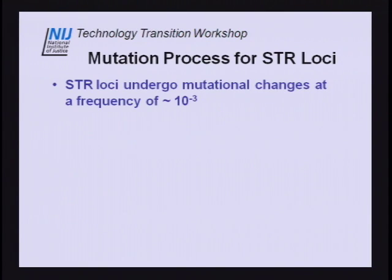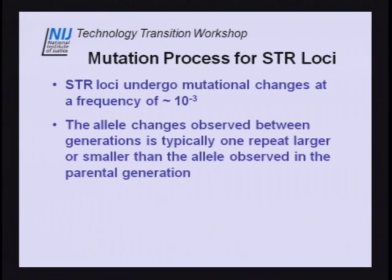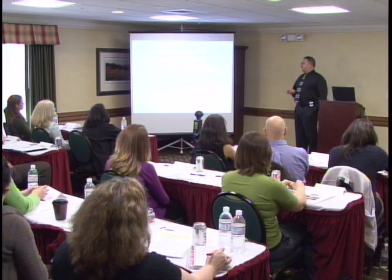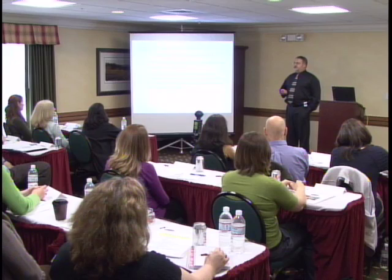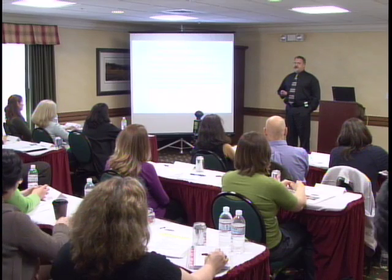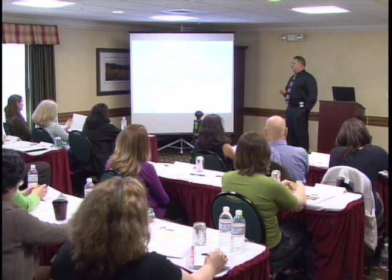For a point of comparison, the mutation rate of a SNP marker system is on the order of 10 to the minus 6 to 10 to the minus 8 — a much, much rarer event. That's why everybody likes the idea of these SNPs, especially for generational type studies, because they don't undergo mutation at a very rapid rate. One of the things we can notice when we look at enough pedigrees is that the new allele being generated in the offspring is typically either one repeat larger or smaller than the ancestral one. That gives us some idea of how we can go ahead interpreting these things.